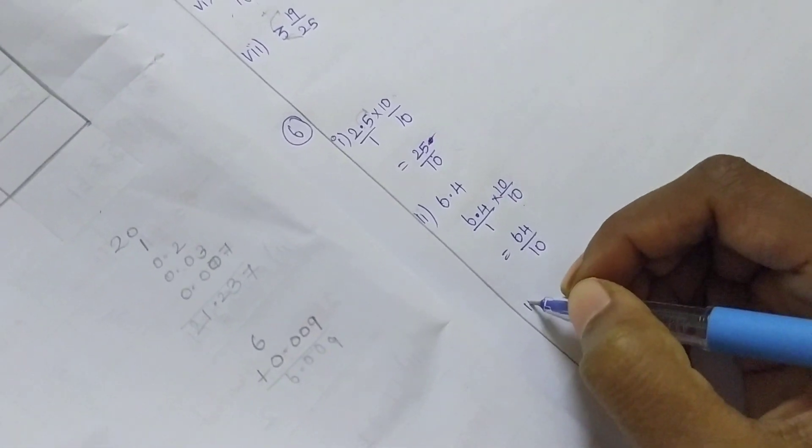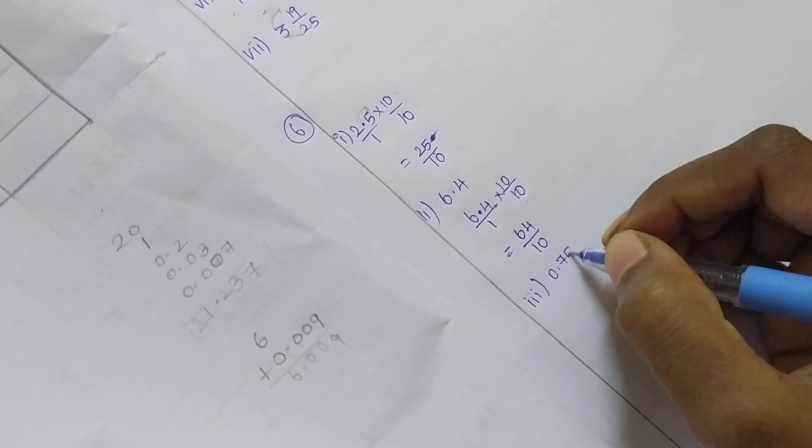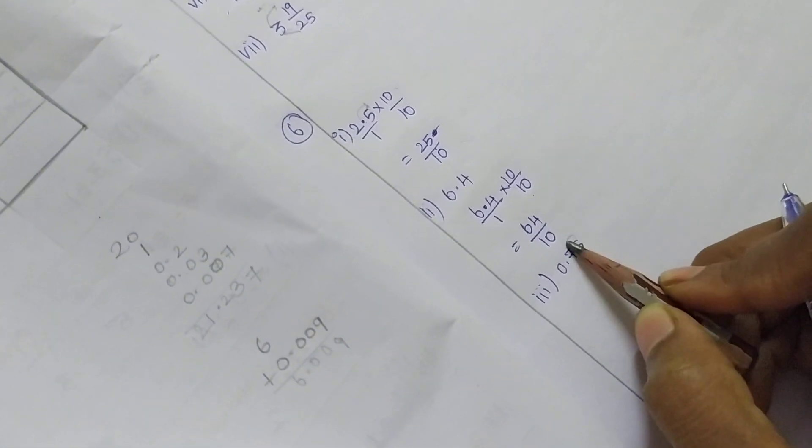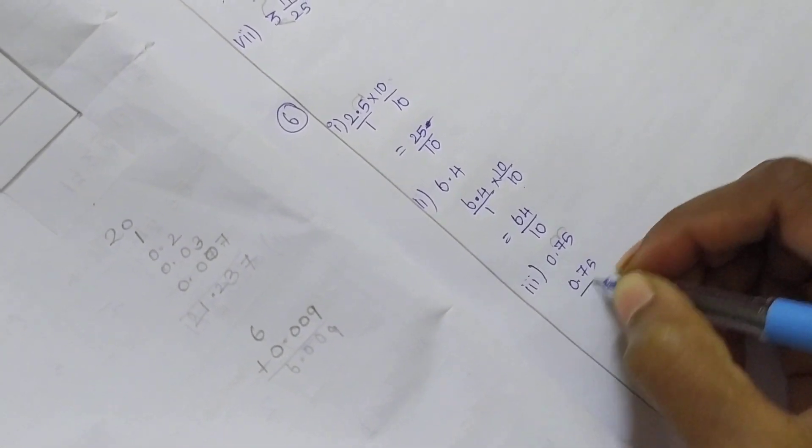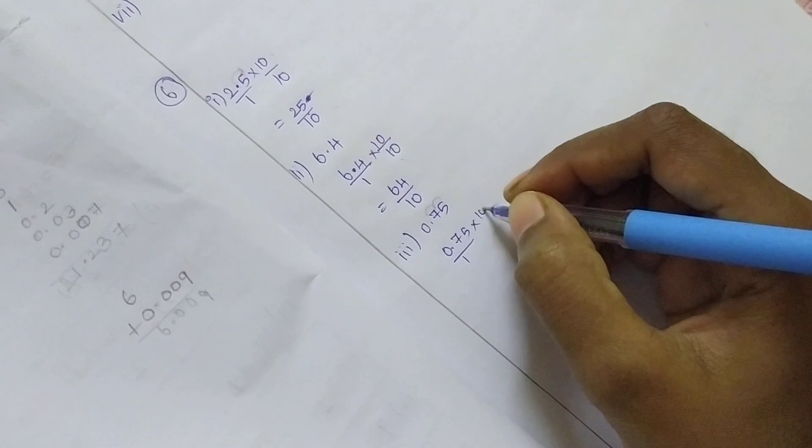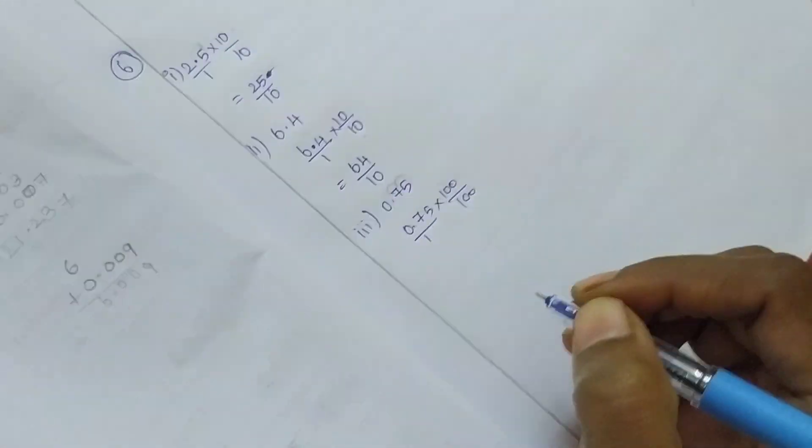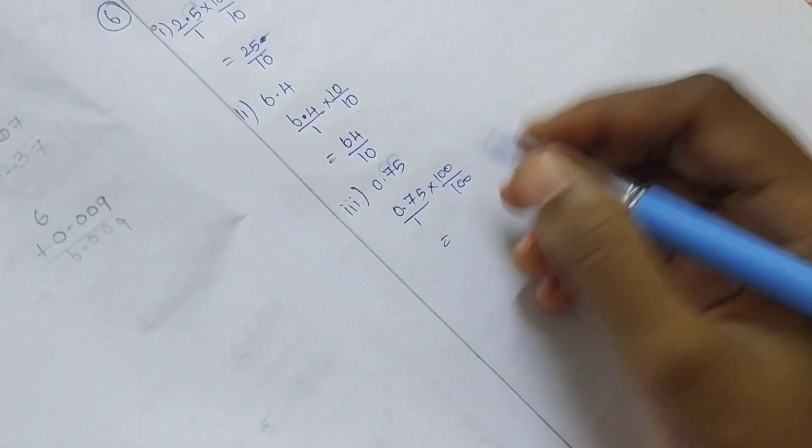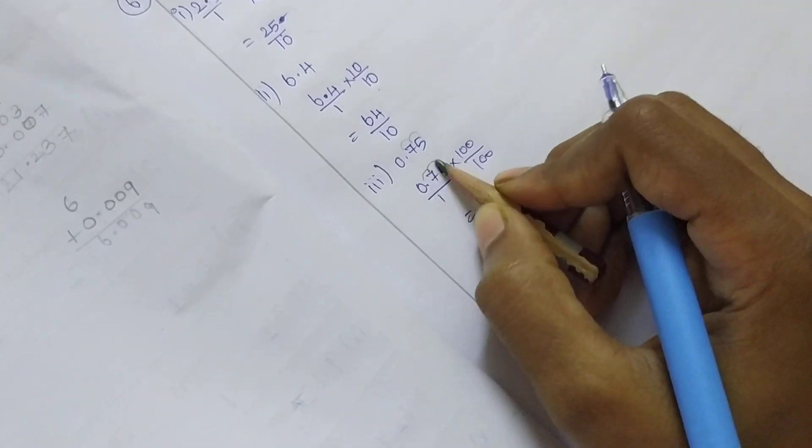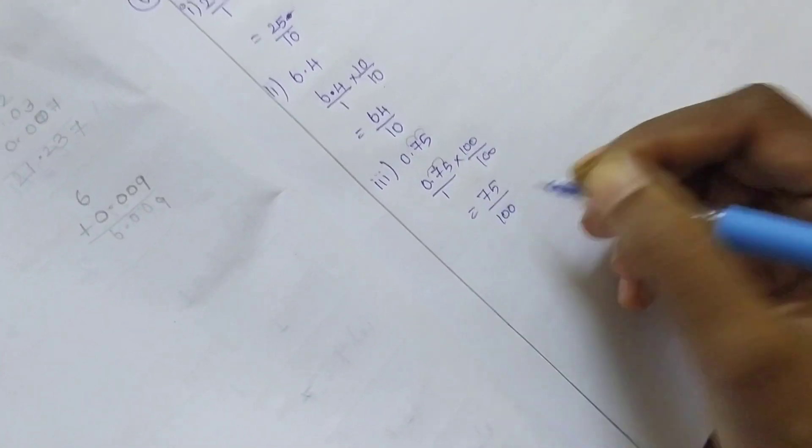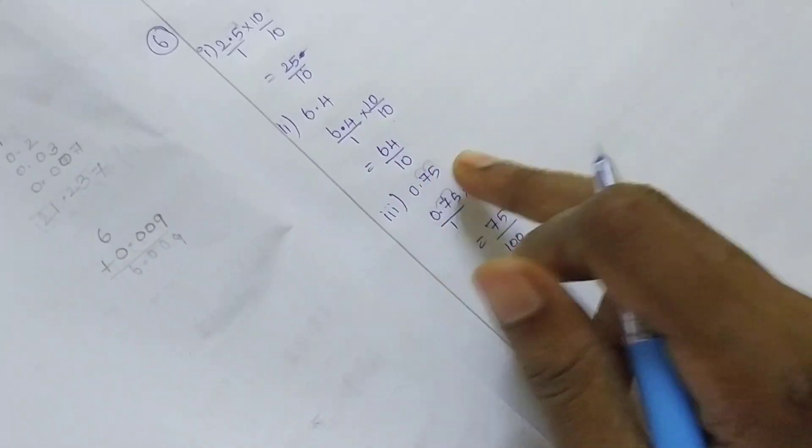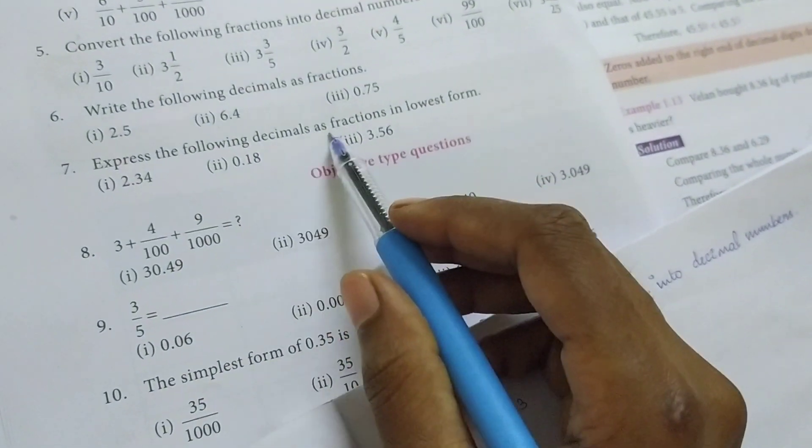Then 0.75. How many points? Two points, so how much do I need to multiply? 100 by 100. Two zeros, so 75/100. My decimal is converted to a fraction.